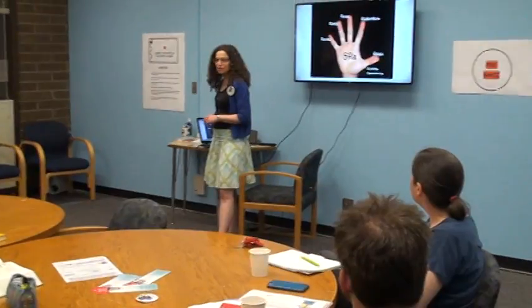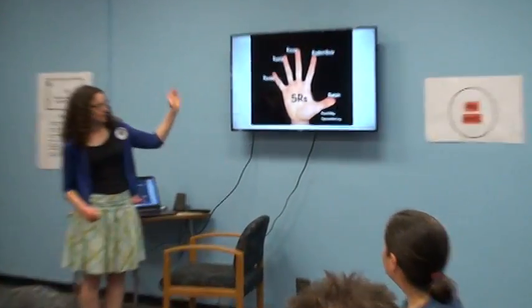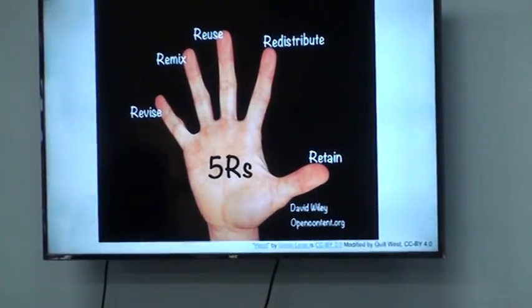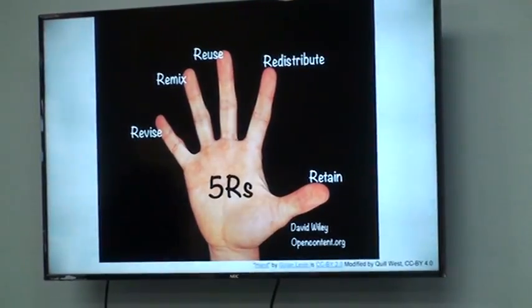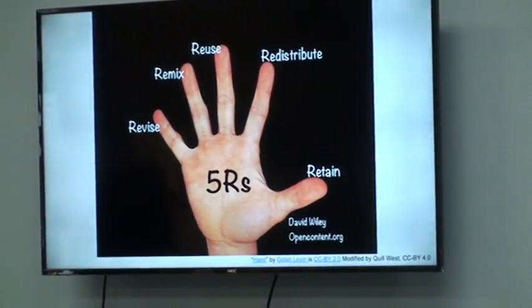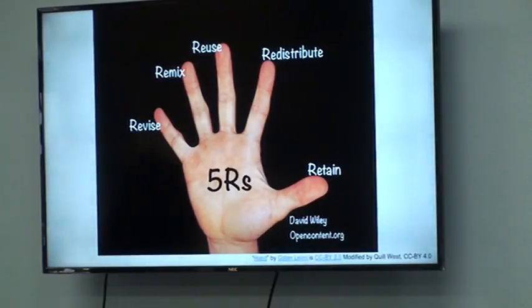Going back to basics: with an open license you can do David Wiley's five Rs - Revise, Remix, Reuse, Redistribute, Retain. Functionally this means you can download and save a copy, share it back out without violating copyright, make changes, and mash things together - as long as you're providing attribution back to the original creator. You have permission in advance to do those things.